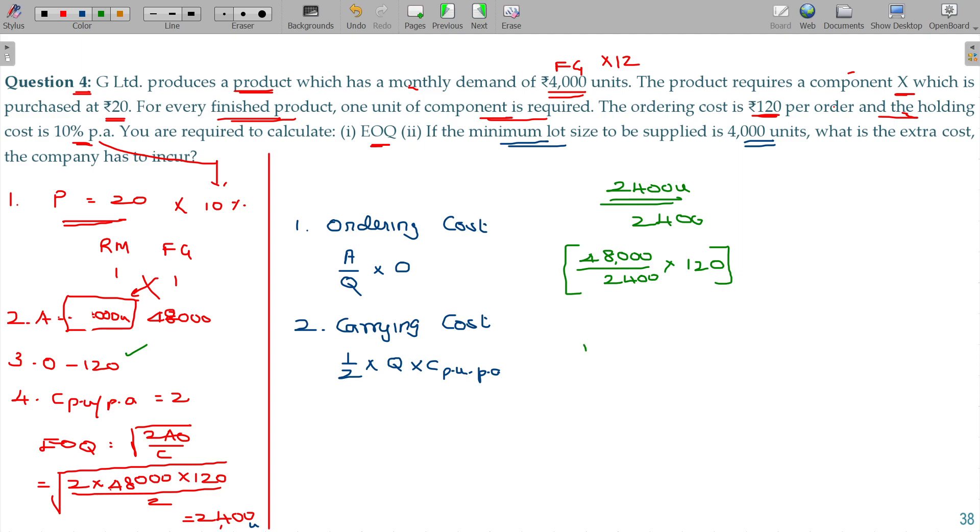Carrying cost: half into quantity held every time, 2,400 units. You can see lot size is 2400, 2400. When you deliver it in your godown, it will be 2400 and consumption will become zero in the later period. If you consume 2,400 units, it will be zero.